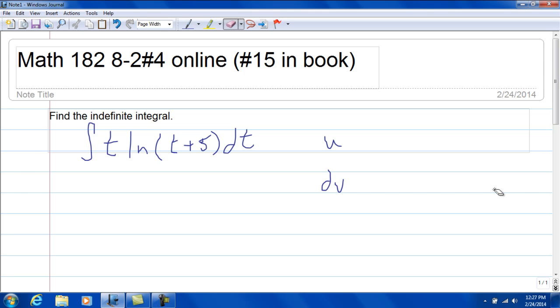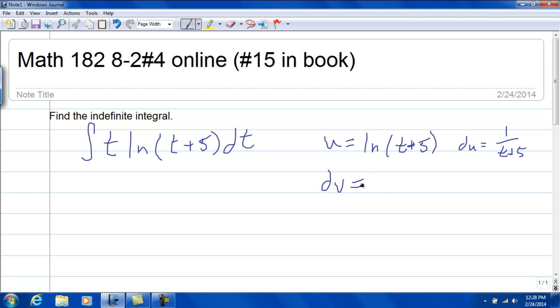So we're going to have to say that our u is going to be the natural log of t plus 5, which means that our du would be 1 over t plus 5. Our dv, we'll have to call that t dt, which means that v would be the integral of t dt, which is going to be t squared over 2.